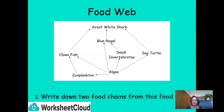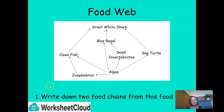I want you to look at the food web in front of you and write down two food chains from it, remembering it takes three to five species. A food web always starts with a producer — here, algae. One simple chain: algae eaten by small invertebrates, who are eaten by the blue regal. Another: algae eaten by zooplankton, zooplankton eaten by the clownfish. Lots of different food chains together make up a food web.